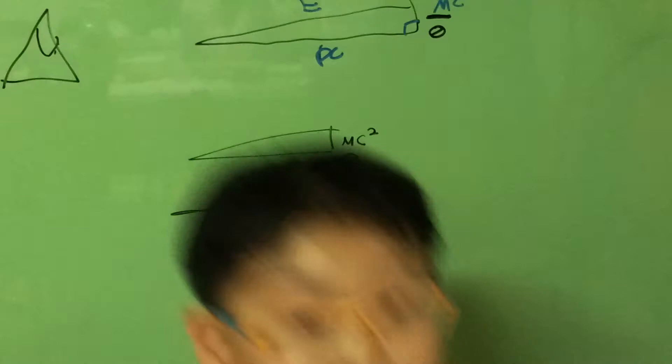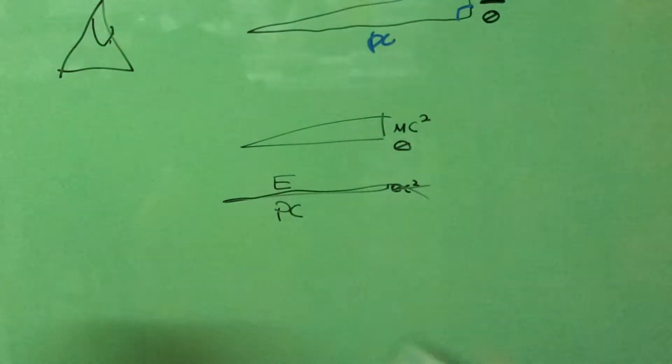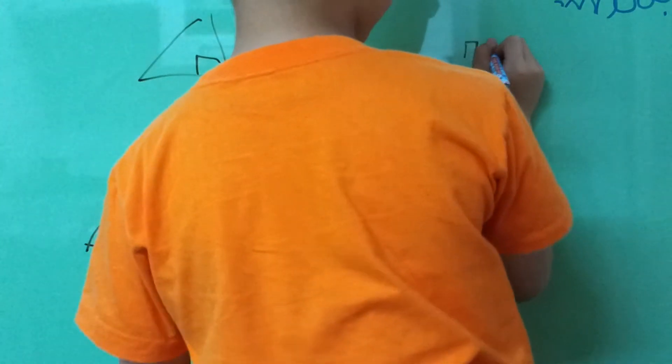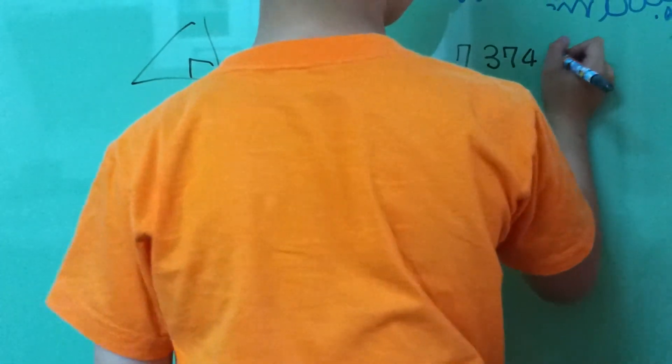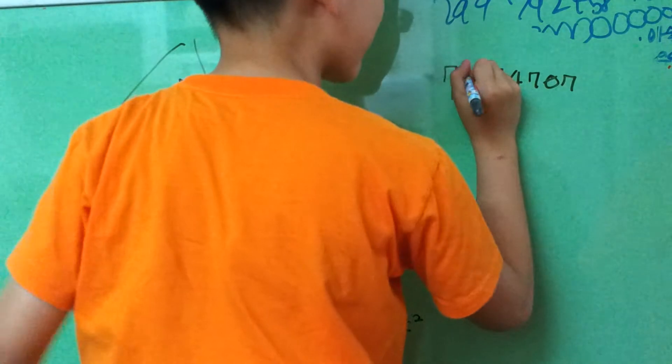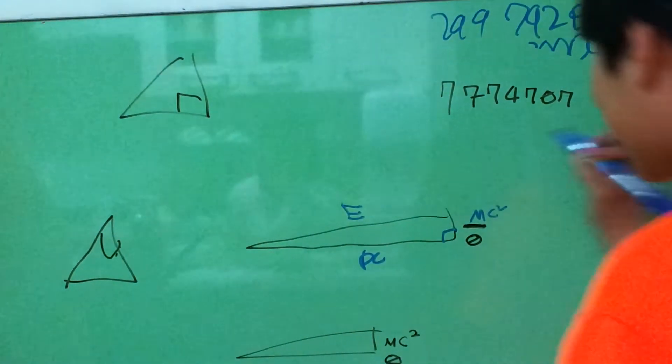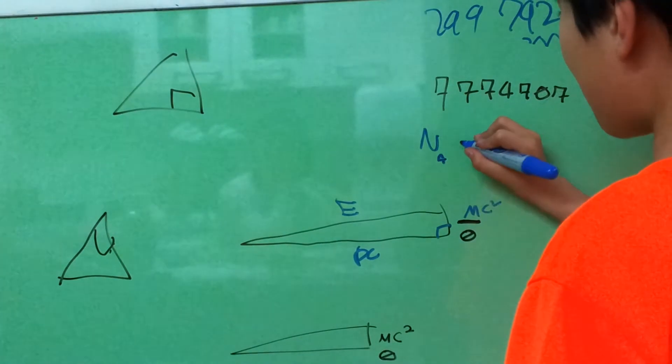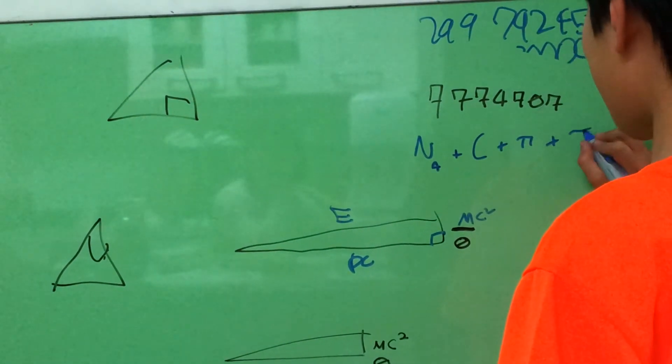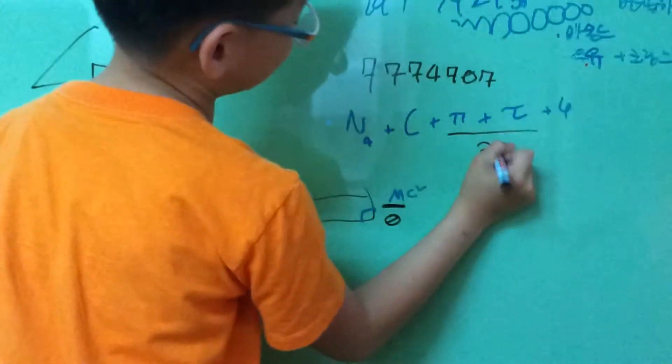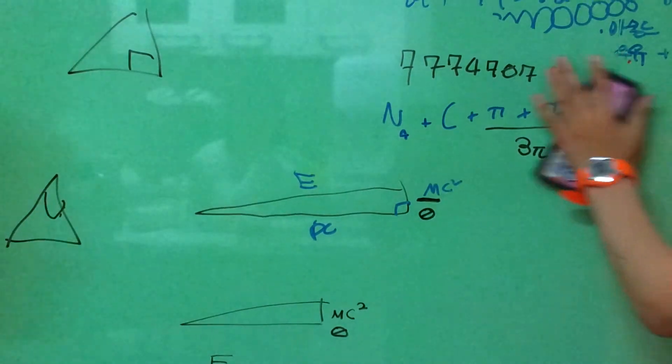But my channel is MSP040707. But also, you can say what is your favorite number. Writing on the board. My favorite number is a huge number. You'll know the Avogadro's number, plus the speed of light, plus pi, plus tau, plus the golden ratio. You can make it to three pi.